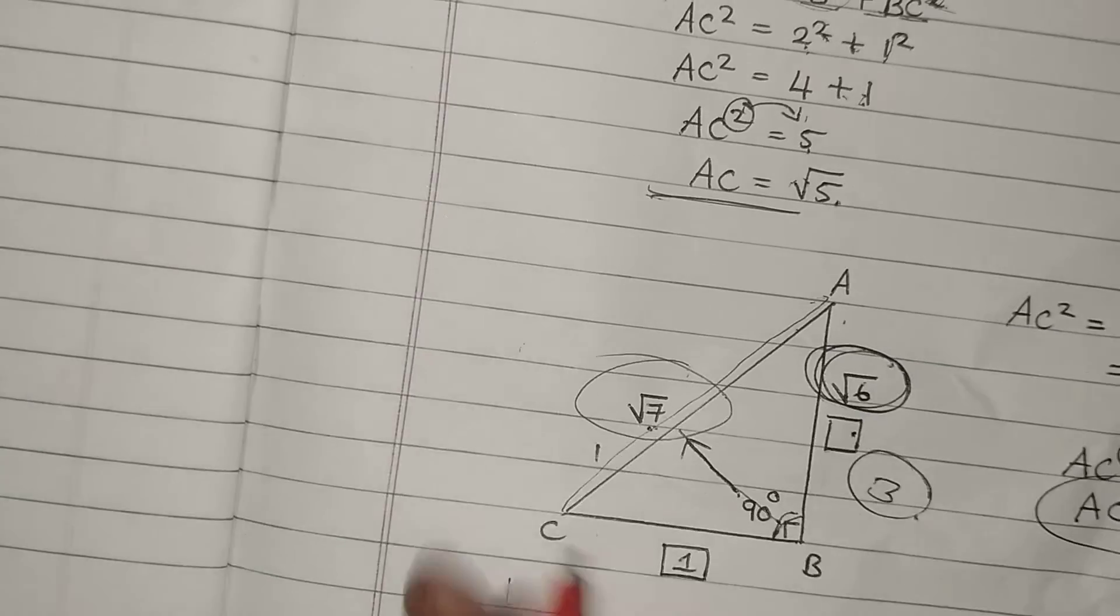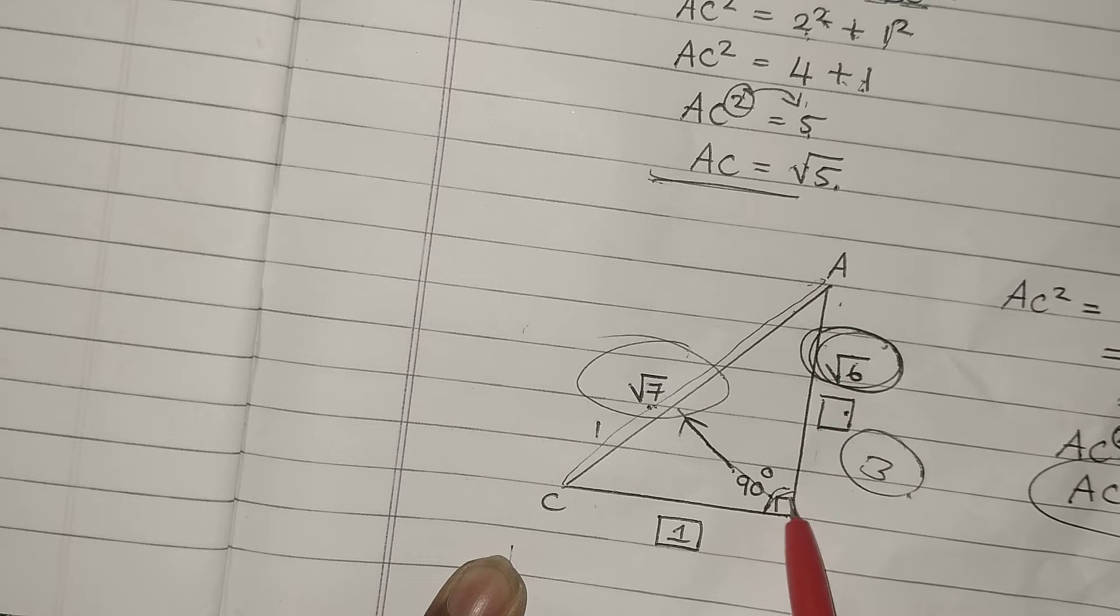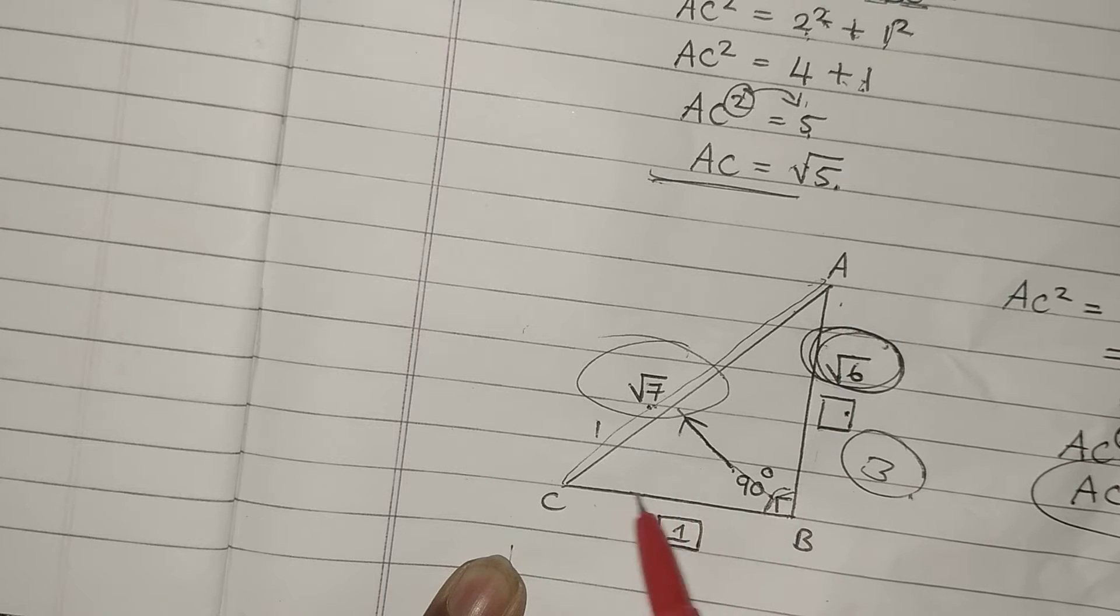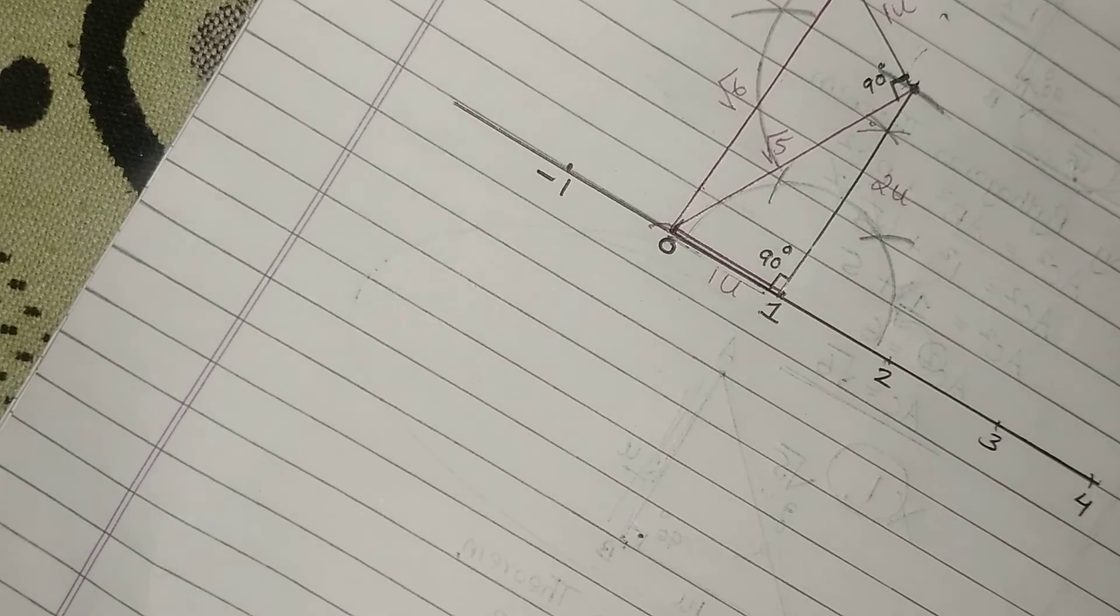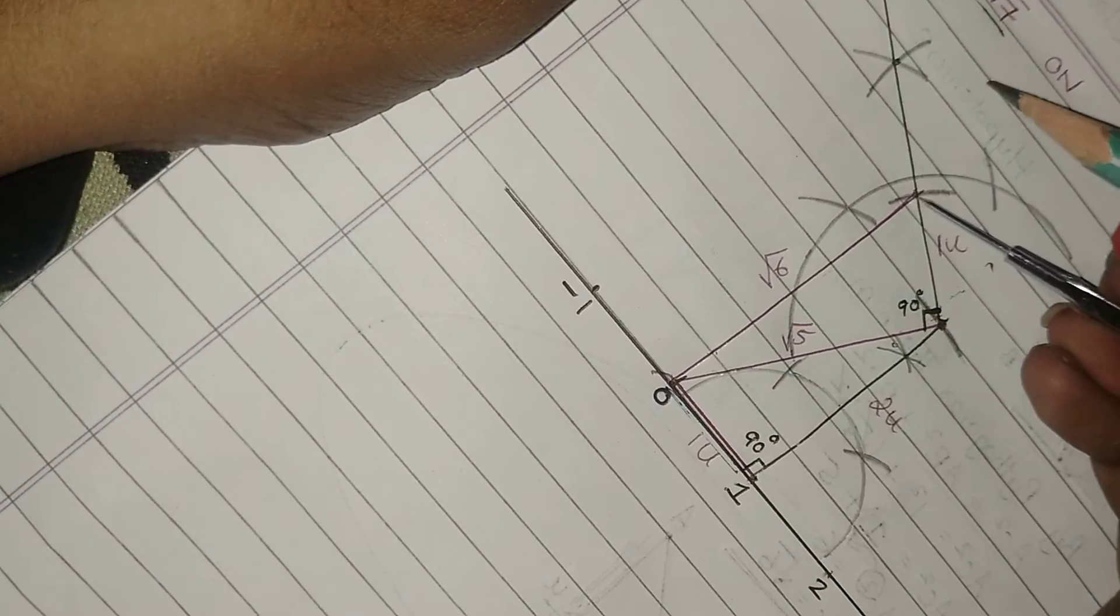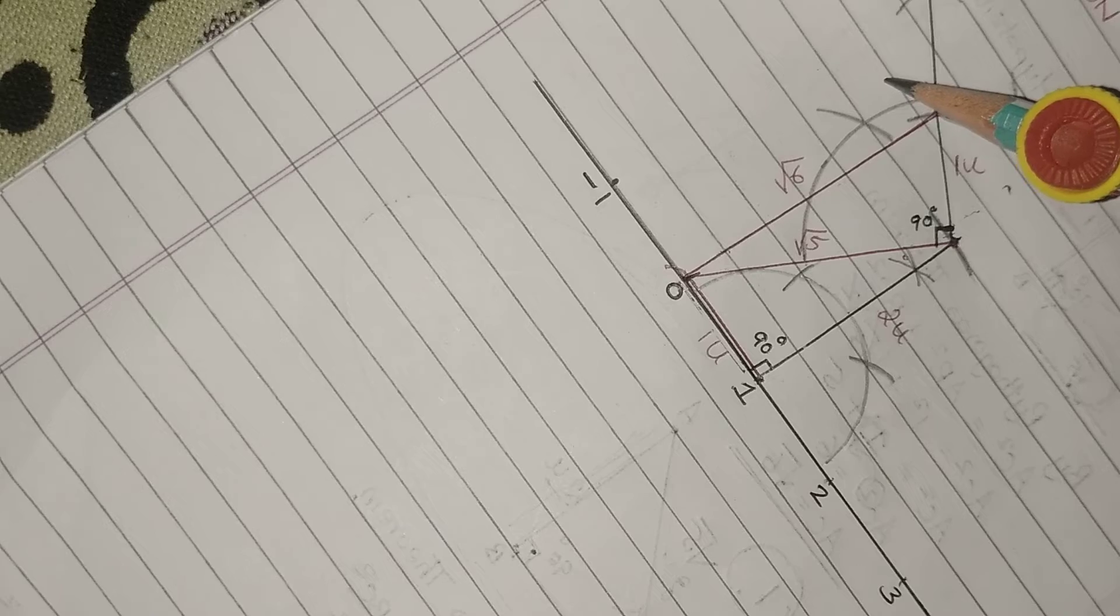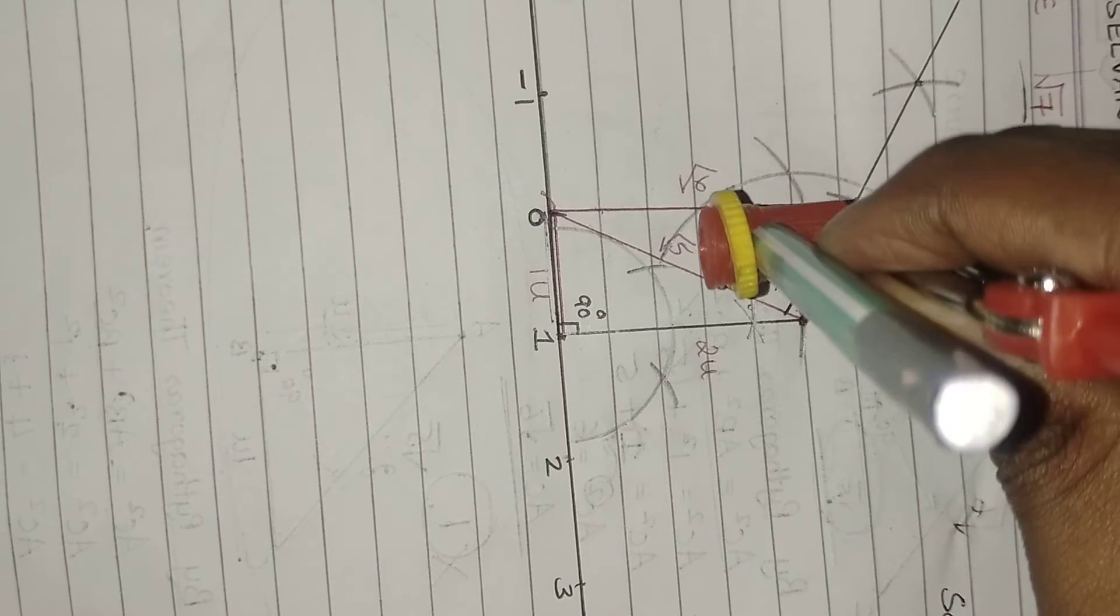Now make use of the last concept. We have root 6. Now draw a perpendicular line. On the perpendicular line, you take 1 unit as a line. From this point, I am just going to draw a semicircle. Let me draw.